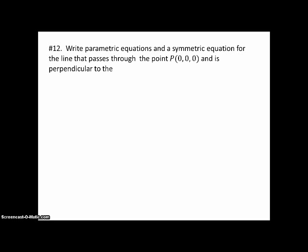Number 12, write parametric equations and a symmetric equation for the line that passes through the point (0,0,0) and is perpendicular to the plane X plus Y plus Z equals 1. The point (0,0,0) is, of course, the origin. So, there's the point on the line. And then, for the plane, I let X and Y equal 0, and then Y and Z equal 0, and Z and X equal 0 to get points on the axes, which obviously are all 1. So, there's the plane.